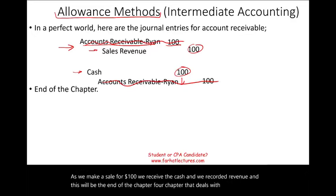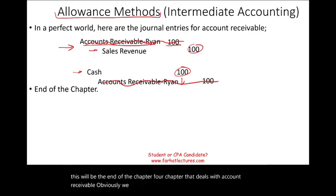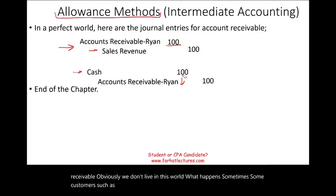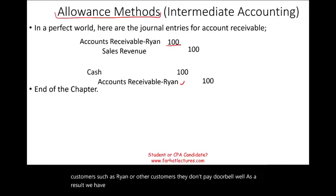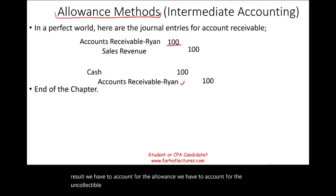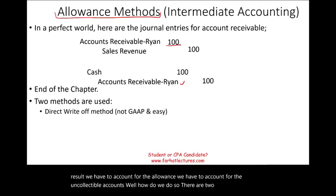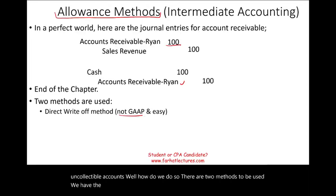Obviously, we don't live in this world. What happens sometimes is some customers, such as Ryan or other customers, they don't pay their bill. As a result, we have to account for the allowance, we have to account for the incollectible accounts. There are two methods to be used: we have the direct write-off method, which is not a GAAP method.